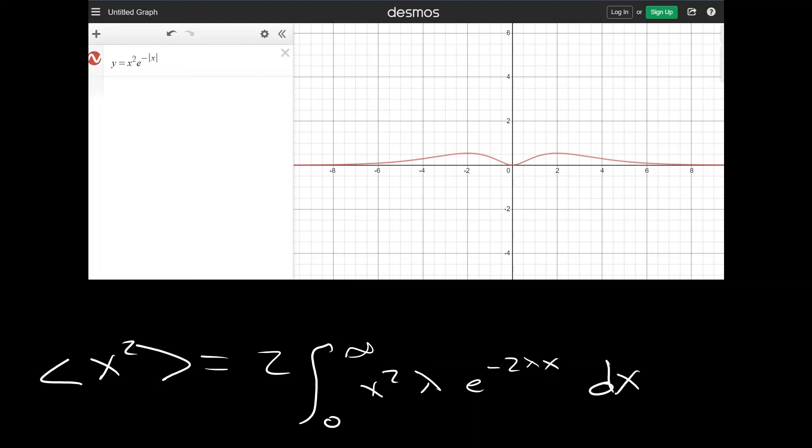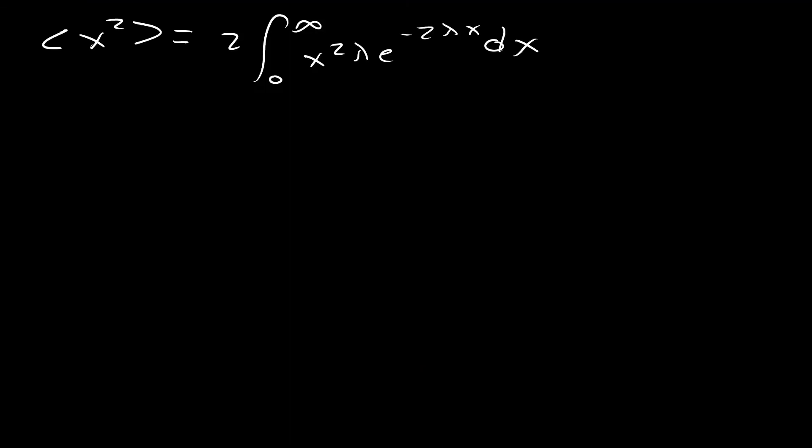So let's evaluate this integral now. We can evaluate this integral with integration by parts. And we're going to have to do integration by parts twice. So what we can do here, if we just go aside, we can set u equal to x squared, so du is 2x dx, then we can set dv equal to e to the minus 2 lambda x dx. So v is equal to minus 1 on 2 lambda e to the minus 2 lambda x dx.